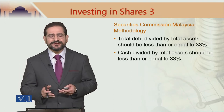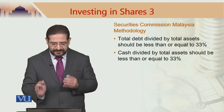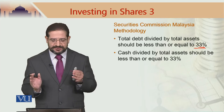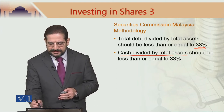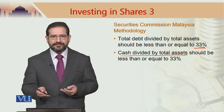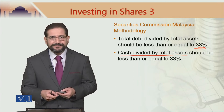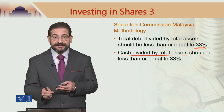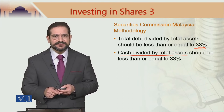Then we have Securities Commission Malaysia methodology. This is a simpler one. They say that total debt divided by total assets should be less than or equal to 33%. Cash divided by total assets should be less than or equal to 33%, only for the financial scheme. So they have simplified the process of stock picking in a Sharia-compliant way. All fund managers investing in stocks listed on Bursa Malaysia who want to be deemed Sharia-compliant would be picking up their stock on the basis of this financial criteria.